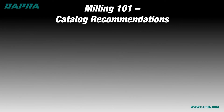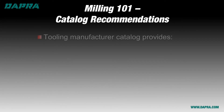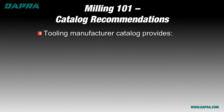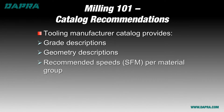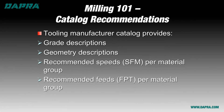Recall from video number four on choosing your carbide grade that when you refer to your cutting tool catalog for help in setting up your milling application, you're generally given these pieces of information: your carbide grade descriptions, cutting-edge geometry descriptions, recommended cutting speeds in surface feed per minute, and recommended cutting feed rates in feed per tooth. Each of these is important and necessary to create a good milling program.